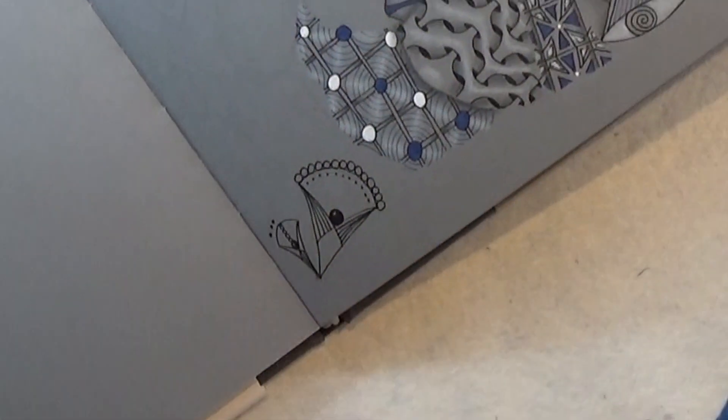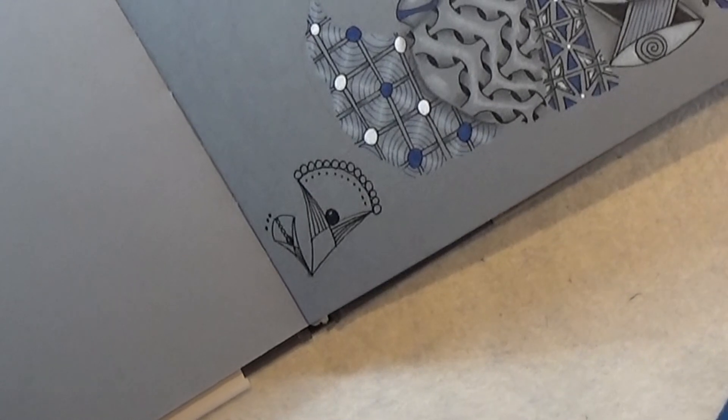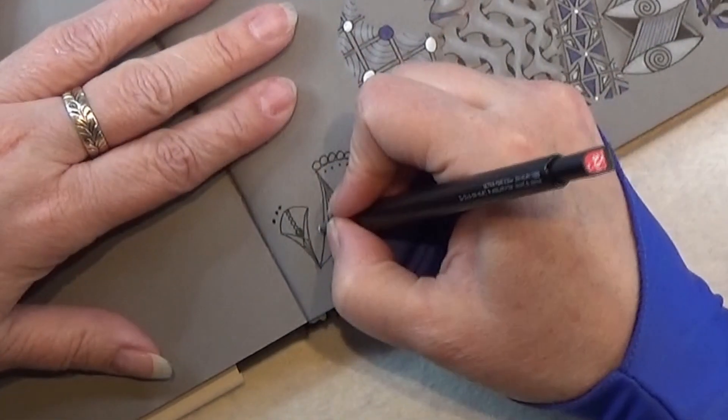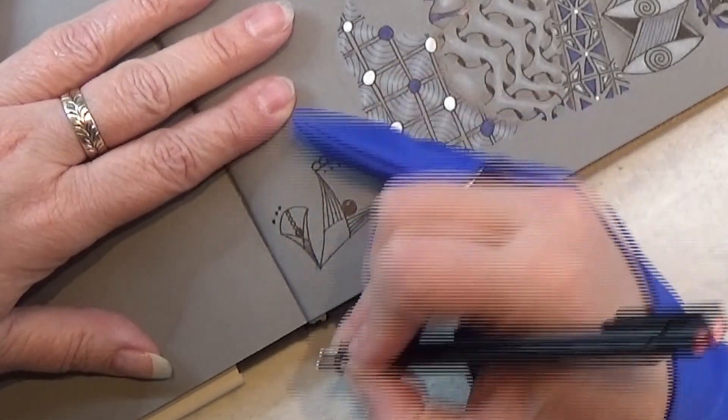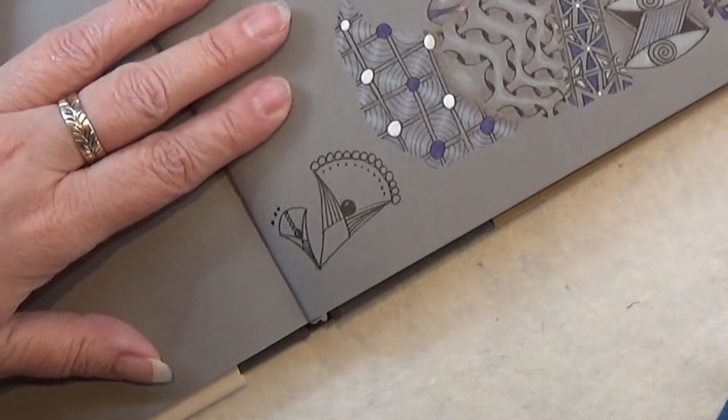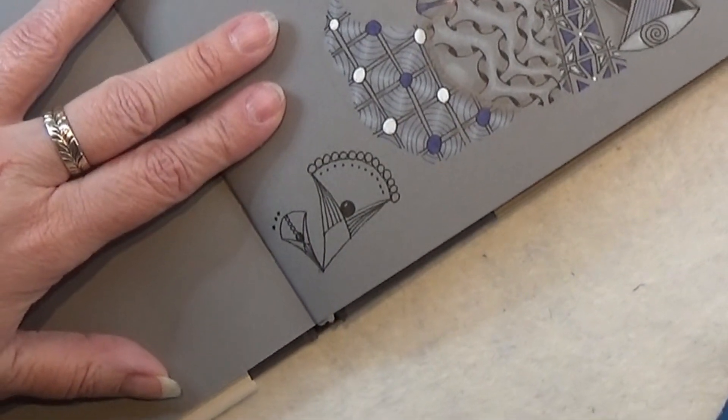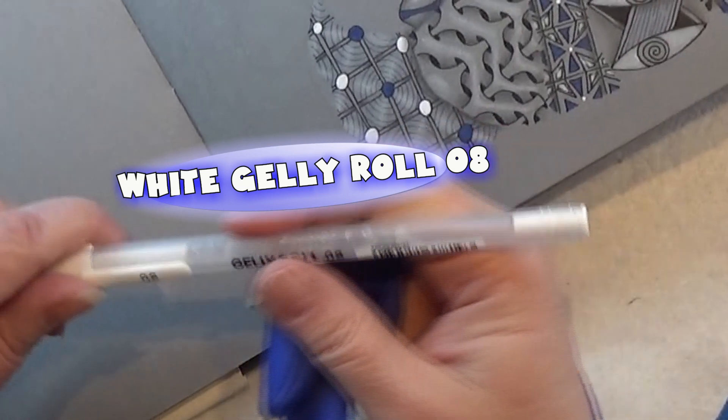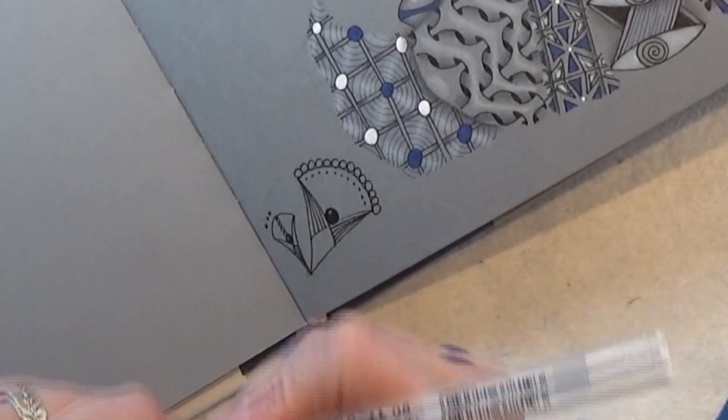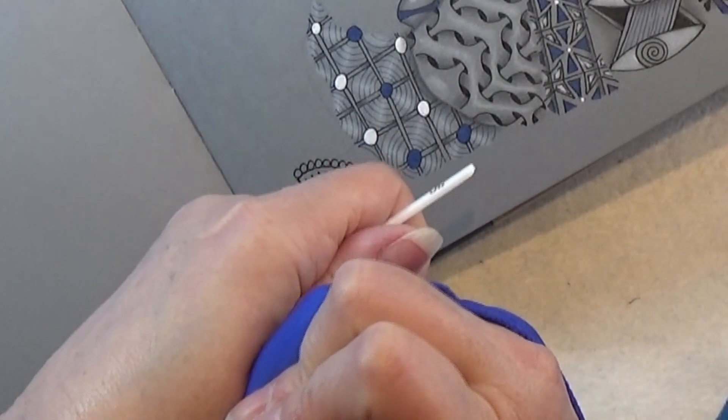You can continue. I could make one on the other side as well but I'm just gonna leave that be. Then I have a string line right here. I'm going to take my jelly roll, the 08 here.